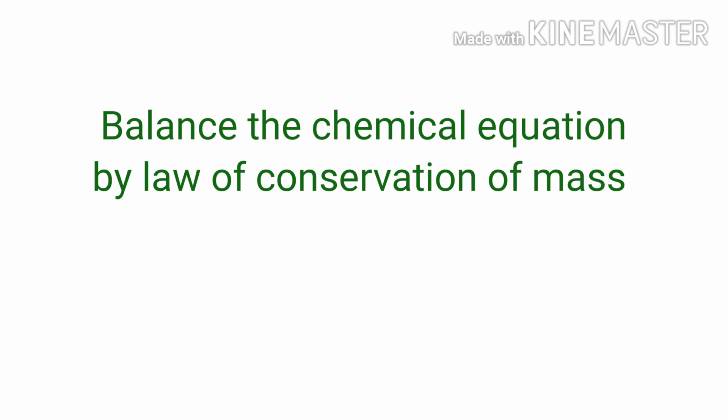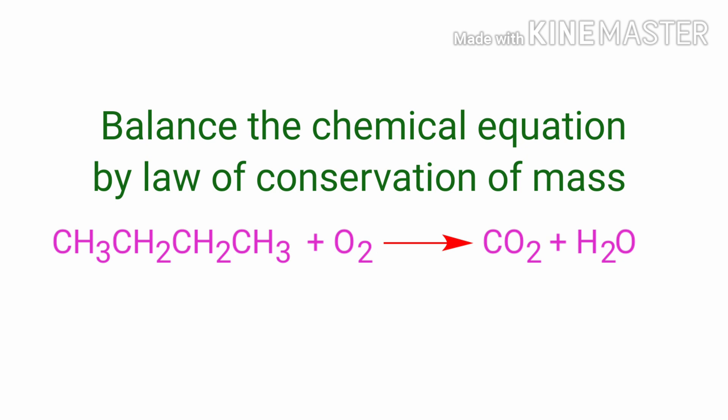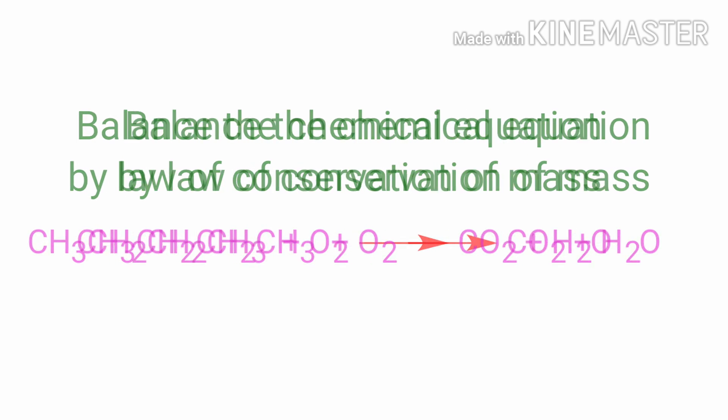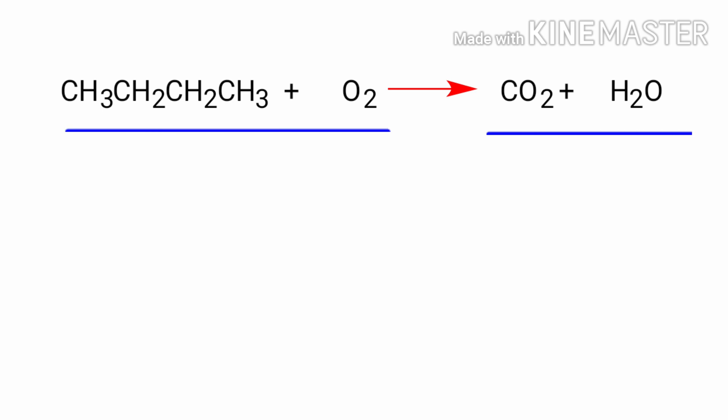Balance the Chemical Equation by the Law of Conservation of Mass. Butane plus Oxygen gives us Carbon Dioxide plus Water. In this equation, the reactants are Butane and Oxygen, and the products are Carbon Dioxide and Water.